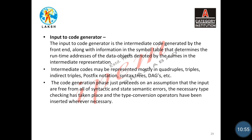Intermediate code may be represented in quadruple, triple, indirect triple, postfix, syntax tree, or directed acyclic graph form — we discussed all these in previous lectures. The code generation phase proceeds on the assumption that the input is free from all syntactic and semantic errors, the necessary type checking has taken place, and the type conversion operators have been inserted wherever necessary. So by the code generator phase all these errors are removed and the intermediate code is error-free.